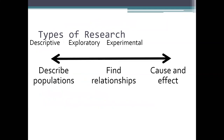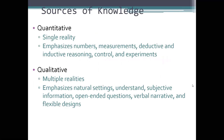Research must be systematic — findings must be replicable, objective, controlling for errors and bias, with limited generalization of knowledge claims. We have to make sure we're doing all of that. There's a difference between finding cause and effect, finding relationships, and describing populations. Quantitative knowledge emphasizes a single reality, numbers, measurements, deductive and inductive reasoning. Qualitative talks about multiple realities.